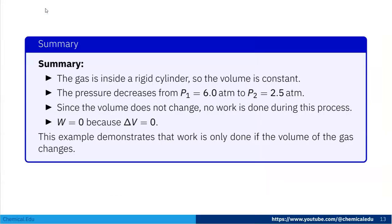In summary, the gas is inside a rigid cylinder with constant volume. Pressure decreases from P1 equals 6.0 atm to P2 equals 2.5 atm. Since volume doesn't change, no work is done during the process, so W equals zero because delta V equals zero. This example demonstrates that work is only done if the volume of the gas changes.